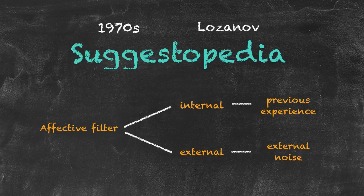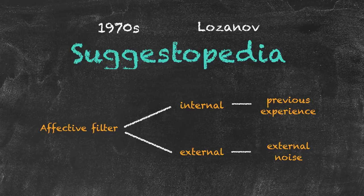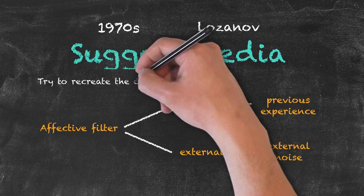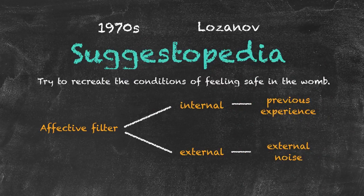The idea of Suggestopedia is that we reduce this affective filter to its lowest possible value. Theory tells us that the affective filter has its lowest value when we're in the womb. So one of the ideas of Suggestopedia was to try to recreate the conditions of feeling safe in the womb, so that our affective filter will be at its lowest possible value and we will be the most receptive to learning.